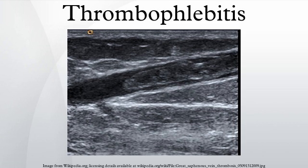Complications: Not all superficial thrombophlebitis is benign — complications are rare, but when they occur they can be serious. The most serious complication occurs when the superficial blood clot is associated with a deeper venous thrombosis. This can then dislodge, traveling through the heart and occluding the dense capillary network of the lungs, resulting in a pulmonary embolism which can be potentially life-threatening.